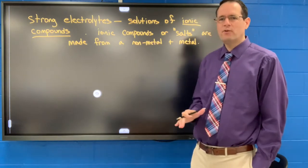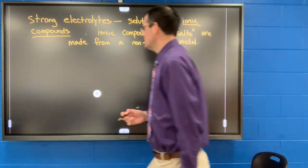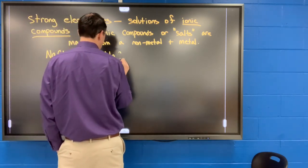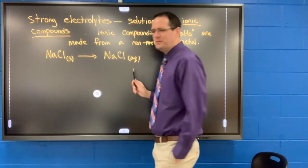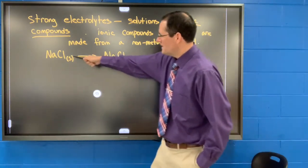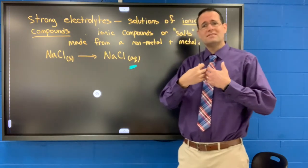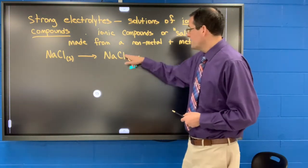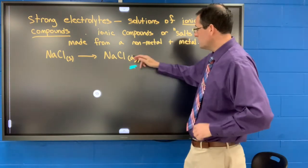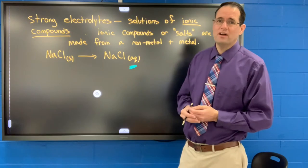Look at the chemical formula — if you see a non-metal and a metal, you can predict it's going to be an electrolyte. For example, sodium chloride was the demonstration we showed last time. As a solid, it is not an electrolyte. But when we add sodium chloride into water, it dissolves, becomes a solution, and conducts electricity — so it's a strong electrolyte. Sodium is a metal on the left, and chlorine is a non-metal on the right of the periodic table.